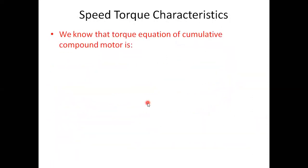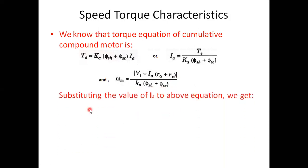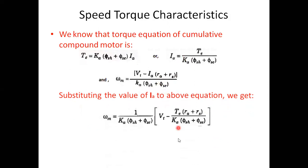Now for speed-torque characteristics, the torque equation is Te = Ka × (Φ_SH + Φ_SE) × Ia, so Ia = Te / [Ka × (Φ_SH + Φ_SE)]. Substituting this into the speed equation ωm = [Vt − Ia(Ra + Rs)] / [Ka × (Φ_SH + Φ_SE)], we obtain the governing equation relating ωm and Te: ωm = [1 / (Ka × (Φ_SH + Φ_SE))] × [Vt − Te(Ra + Rs) / (Ka × (Φ_SH + Φ_SE))].